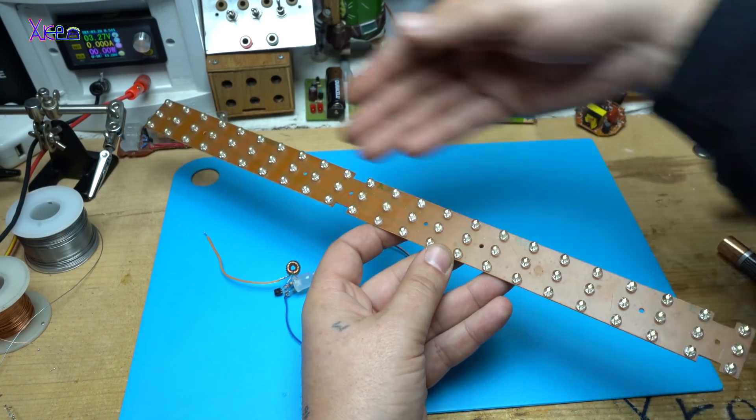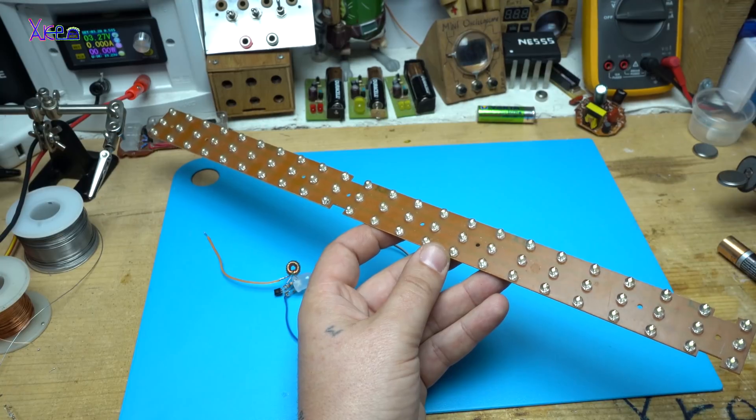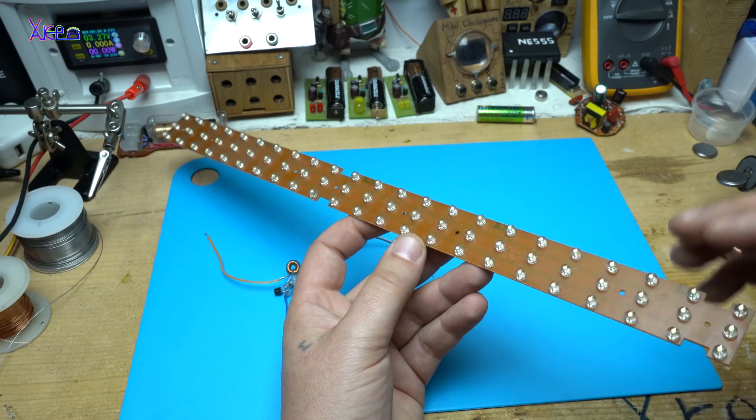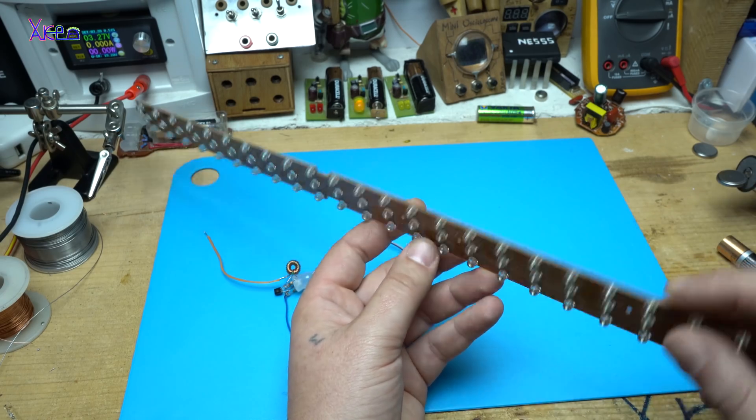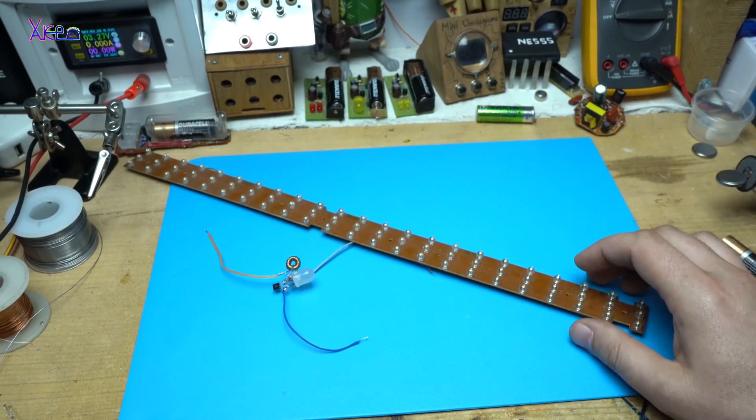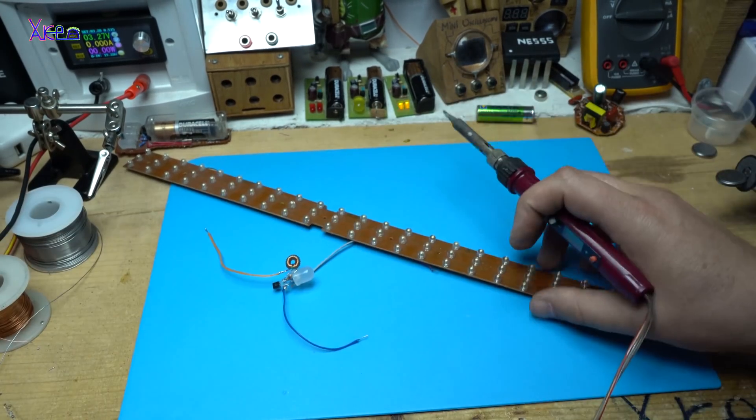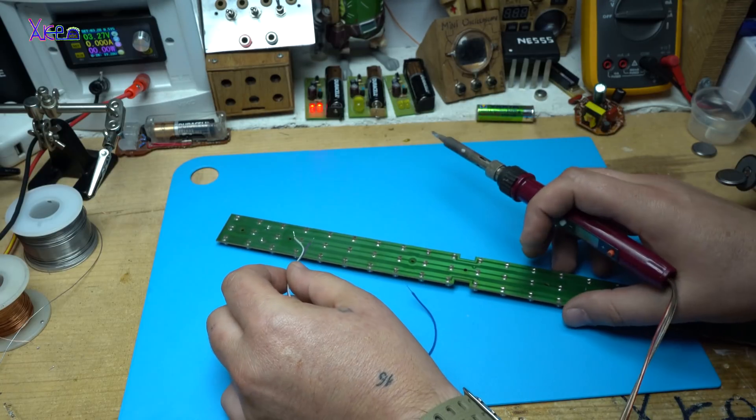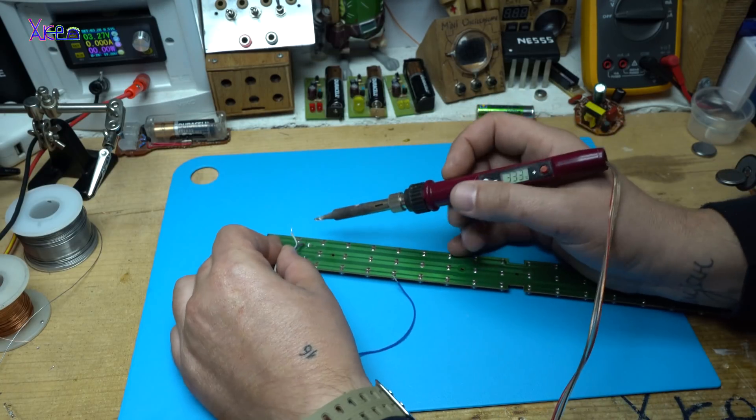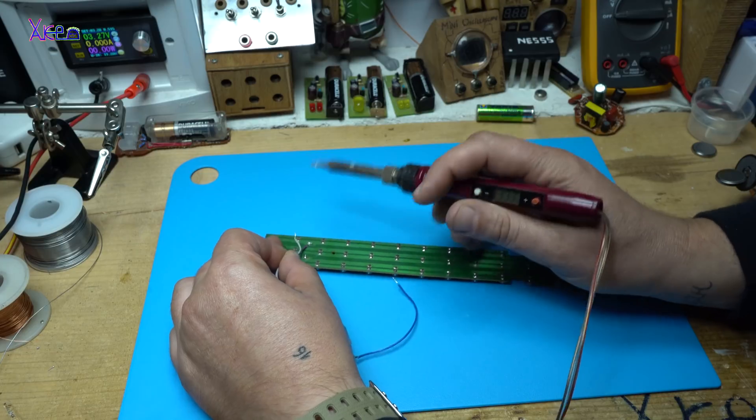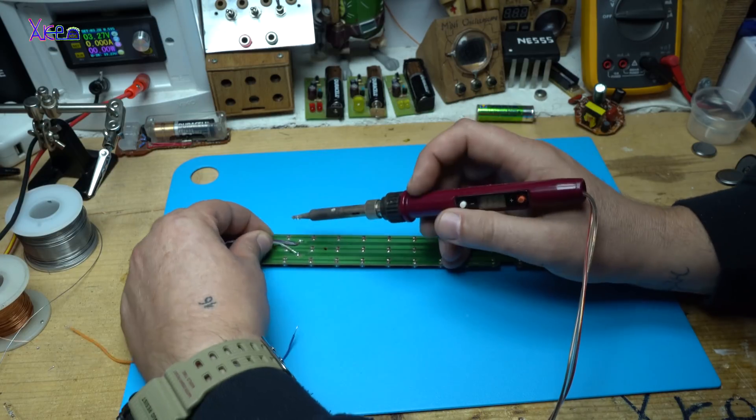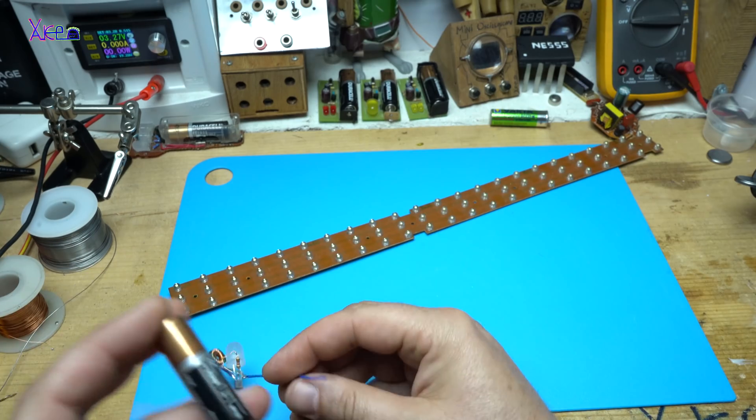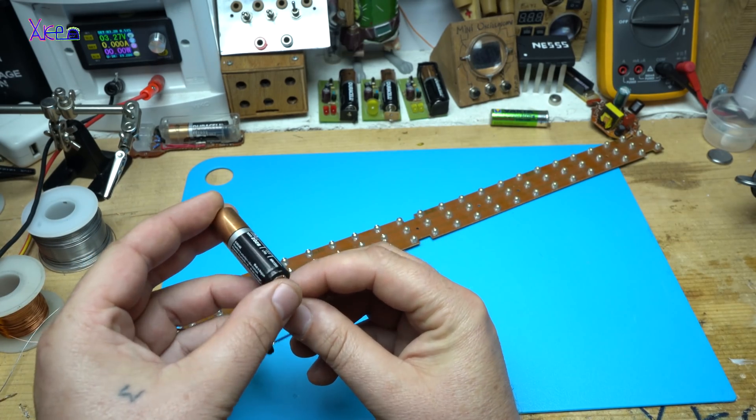To light up 60 white LEDs connected in parallel. Let's try. Just to solder here. This goes to positive. This goes to negative. Let's see if it will work.